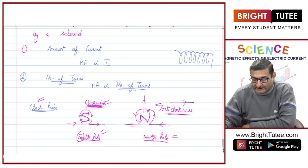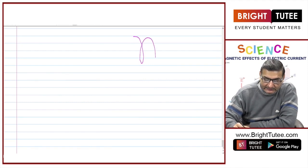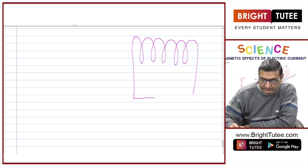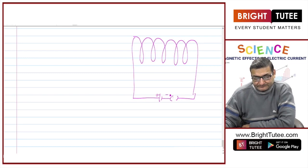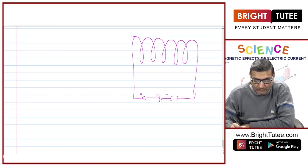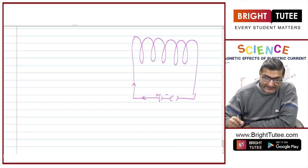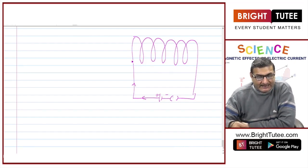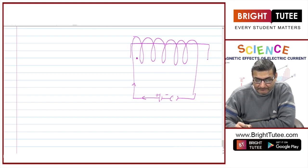In the solenoid, we just saw that there are a large number of turns of an insulated copper wire connected to a cell or battery and the current is allowed to pass in it. If this is an empty or hollow coil, what I will do is I will just insert an iron rod into it.